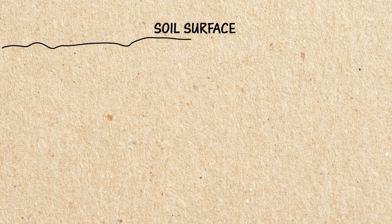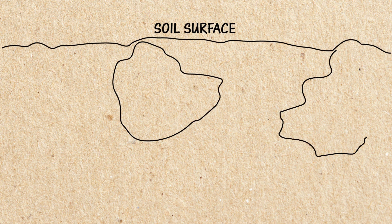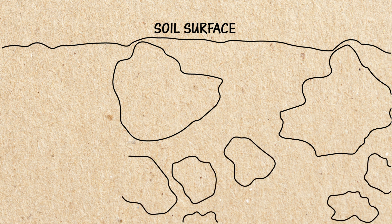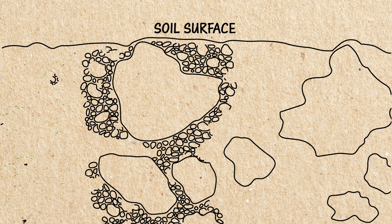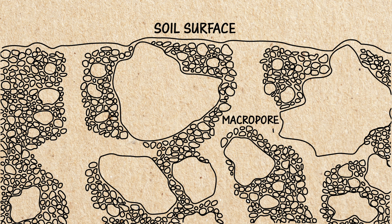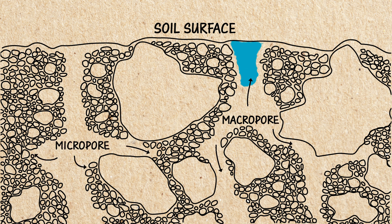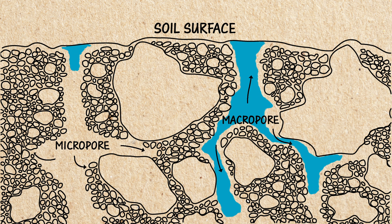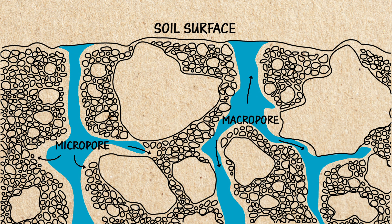The first is pore space. Pore space is the physical space between soil particles. It can vary in size from micropores to macropores. The size of the pores has a direct effect on how water, nutrients, and oxygen move horizontally and vertically within the soil profile.